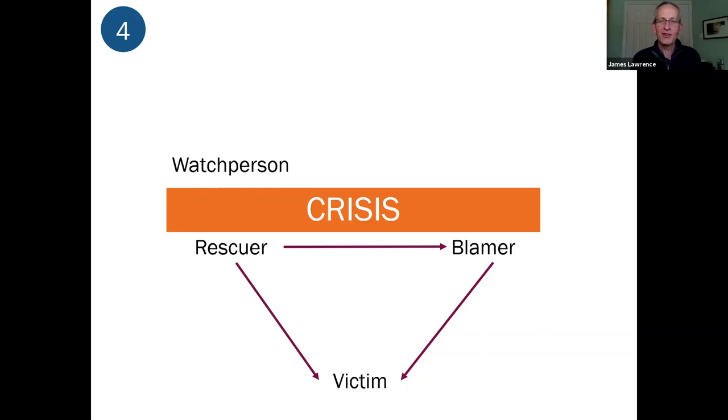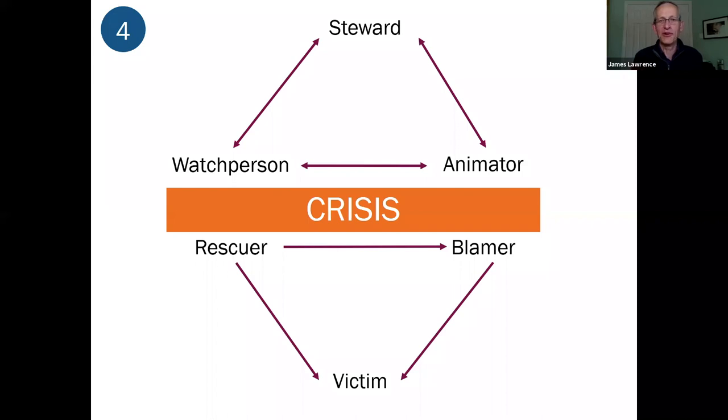Instead, what we want to try and do is move out of that negative triangle to a positive triangle which is about being a watchperson—trying to discern what God is doing, what's going on in our culture, in our church, amongst our people, and in ourselves. Trying to listen and discern what's going on. And then trying to be an animator of the people of God, to help them give of their best in this season. We all know that it is better to give than to receive, so part of our role as a church leader is to draw out of our people the very best they have to offer. And in all of that to be a steward of what God has given us.